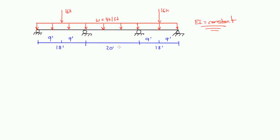Welcome to another example for the moment distribution method. Here we have quite a different beam from what we've previously done. We have a beam with two middle supports — three of these are rollers, one of them is a pin. Notice that we don't have fixed ends on any side. We also have a uniformly distributed load of four kips per foot, and then we have two point loads, both 16 kips, acting at the middle of both spans.